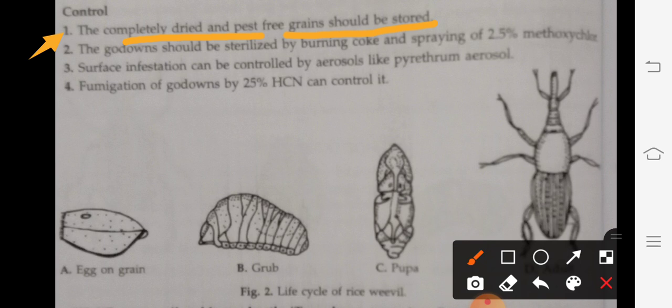Second: the ground should be sterilized by burning coke and spraying of 2.5% methoxychlor.